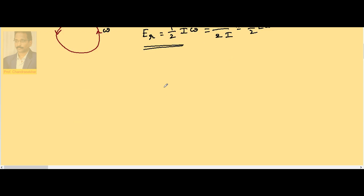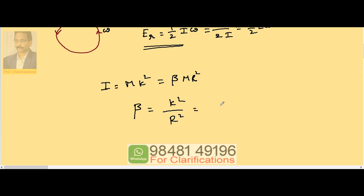Now, moment of inertia in general is I equal to mk squared, where m is the total mass of the body and k is the radius of gyration. If you want to write this in terms of radius instead of radius of gyration, we introduce a constant beta with mr squared. Because if you observe most bodies, the moment of inertia may be mr squared by 2, mr squared by 4, 2 by 5 mr squared, 3 by 5 mr squared, etc. So this beta is called the shape constant, defined as k squared by r squared.